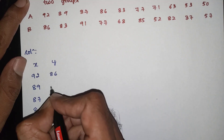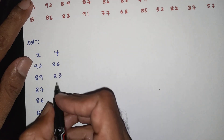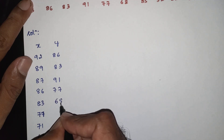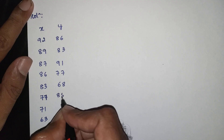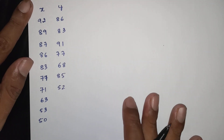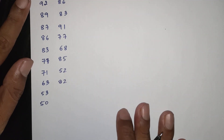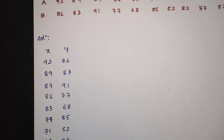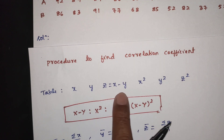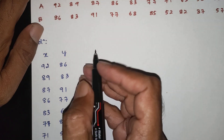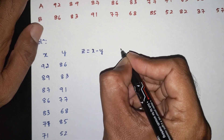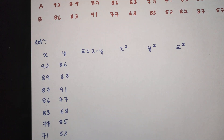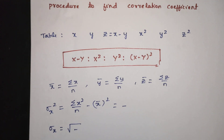The Y values are: 86, 83, 91, 86, 77, 83, 68, 85, 52, 82, 37, 52, 57, 42, 43, 44, 43, 44, 41, 44.